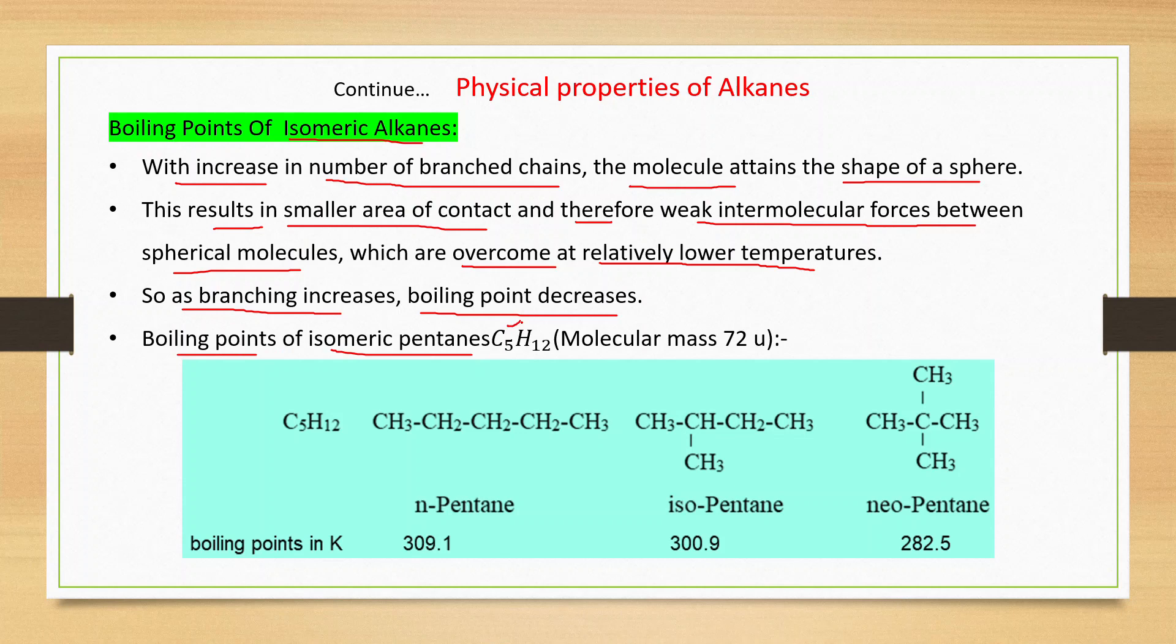The formula is C₅H₁₂ with molecular mass 72u. For n-pentane, the straight chain hydrocarbon, the boiling point is 309.1 Kelvin. Isopentane has one branch and its boiling point is 300.9 Kelvin. Neopentane has two branches - more branches means lower boiling point - and its boiling point is 282.5 Kelvin.